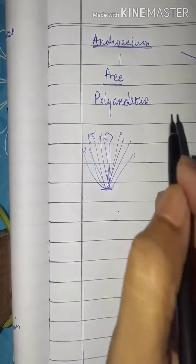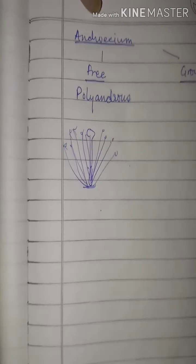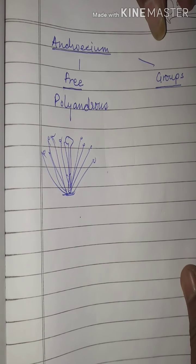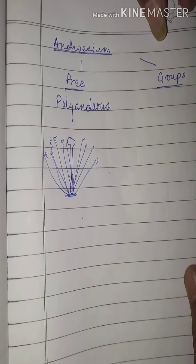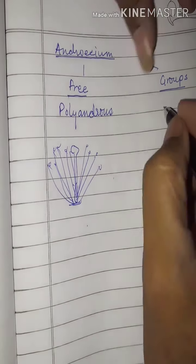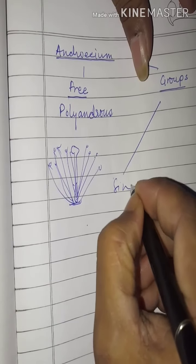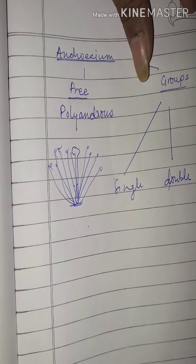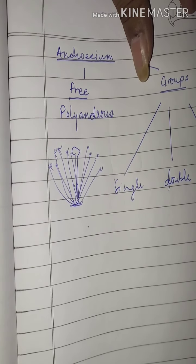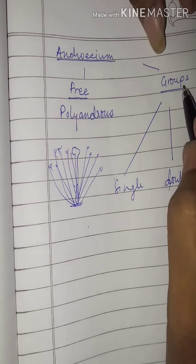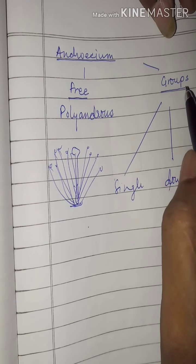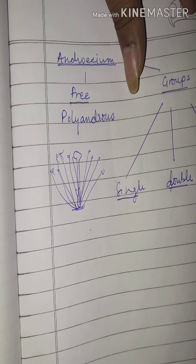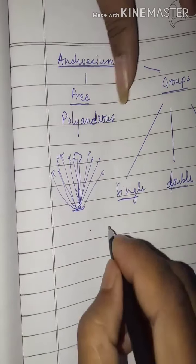If the stamens are found in organized groups, the groups may be organized into a single group, a double group, or several groups.